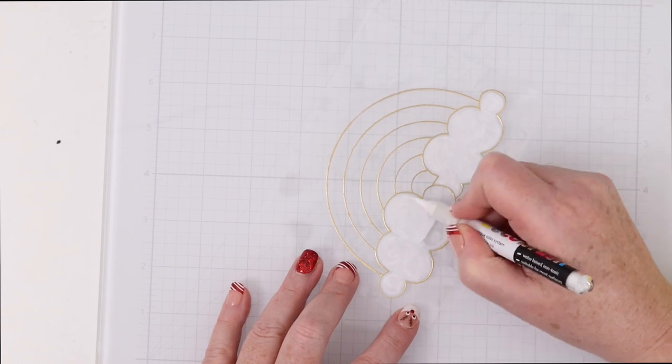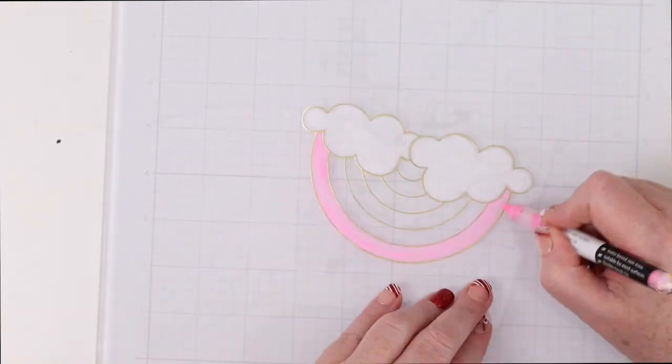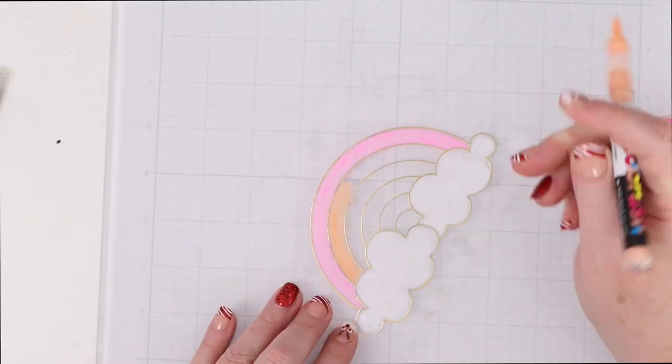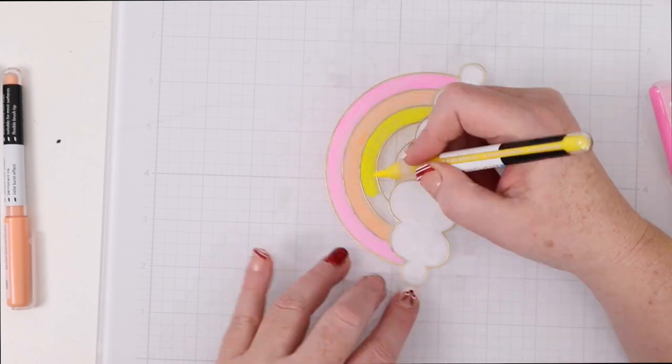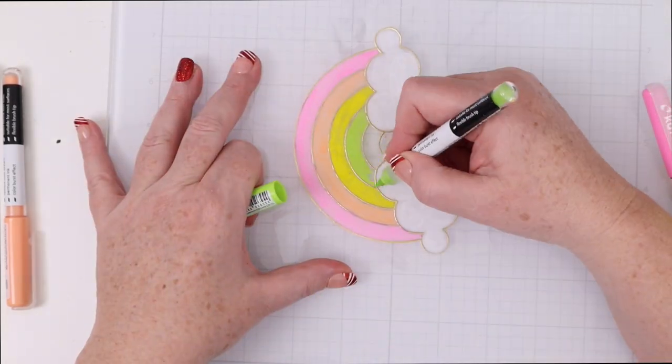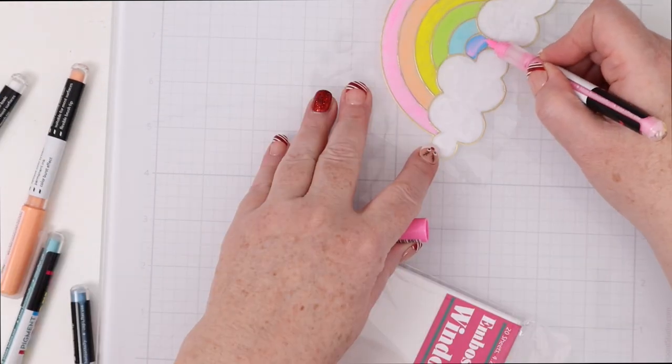Now with Copic markers for example something that you are going to keep for a lifetime you don't want to color near embossing powder because it can get in the nib it can destroy the nib of course that's replaceable but it can also get into the marker and then you'll always have it kind of in there mucking things up for you.